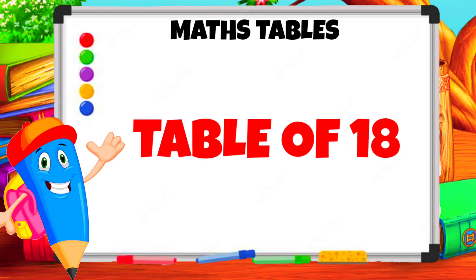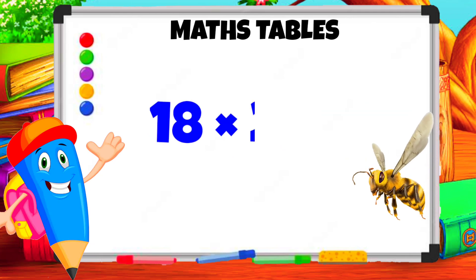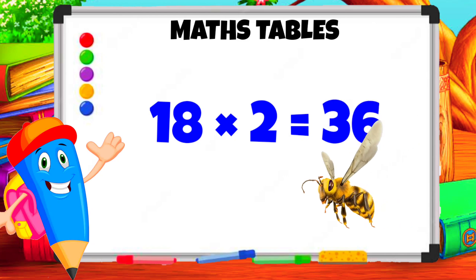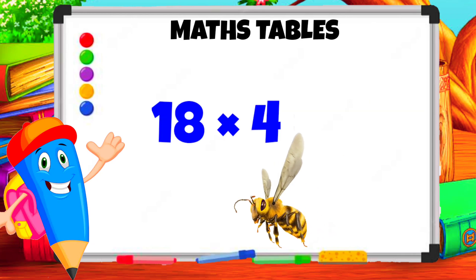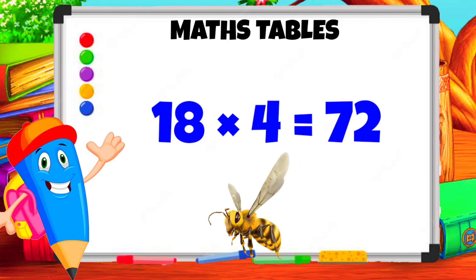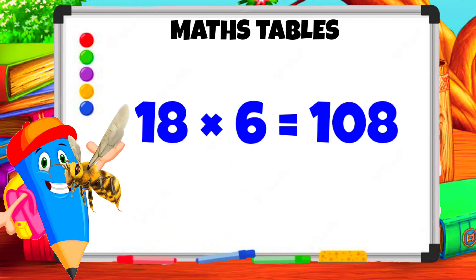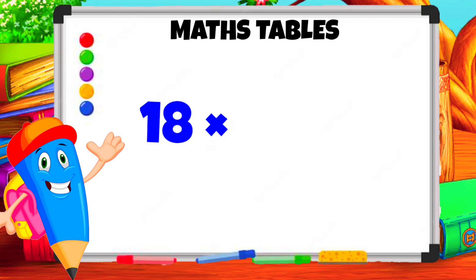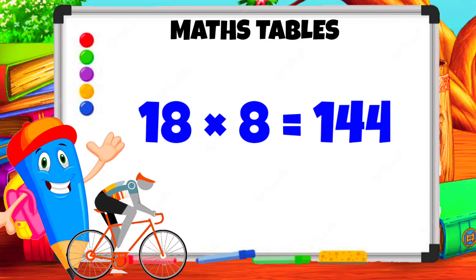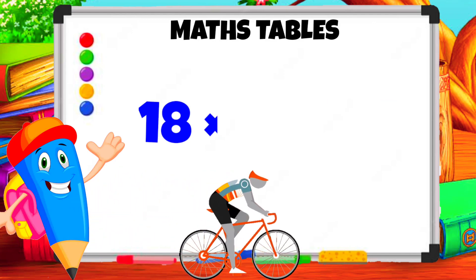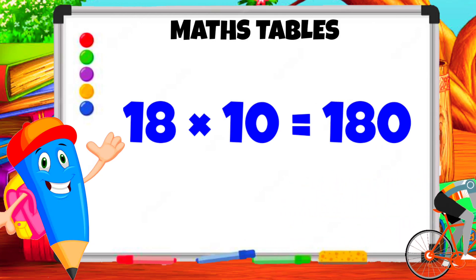Table of 18. 18 1s are 18. 18 2s are 36. 18 3s are 54. 18 4s are 72. 18 5s are 90. 18 6s are 108. 18 7s are 126. 18 8s are 144. 18 9s are 162. 18 10s are 180.